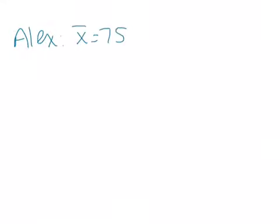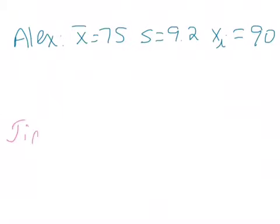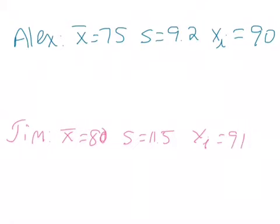Let's start with a basic problem where we're comparing two people. Alex took a test where the mean was 75 and the standard deviation was 9.2, and his score was a 90. Meanwhile, Jim also took a test — in a different class — where the mean was 80, the standard deviation was 11.5, and his score was a 91.